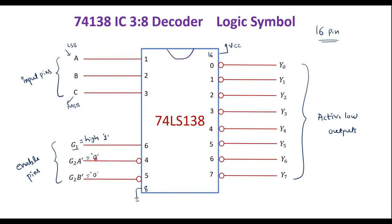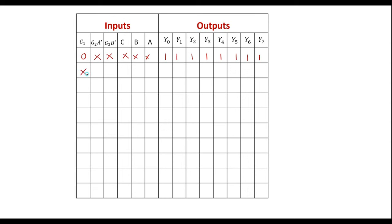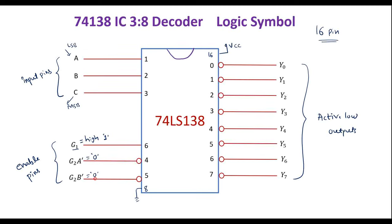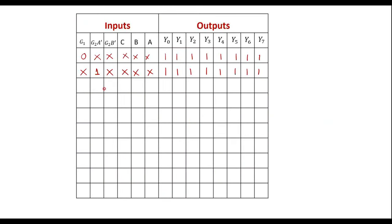Similarly, G2A-bar should be 0. If G2A-bar is 1, irrespective of G1 and G2B-bar (marked as don't care, meaning either 0 or 1), all the outputs are again high. Likewise, G2B-bar should be 0. If G2B-bar is 1, irrespective of G1 and G2A-bar, and irrespective of inputs A, B, C (all marked don't care), all outputs are high.